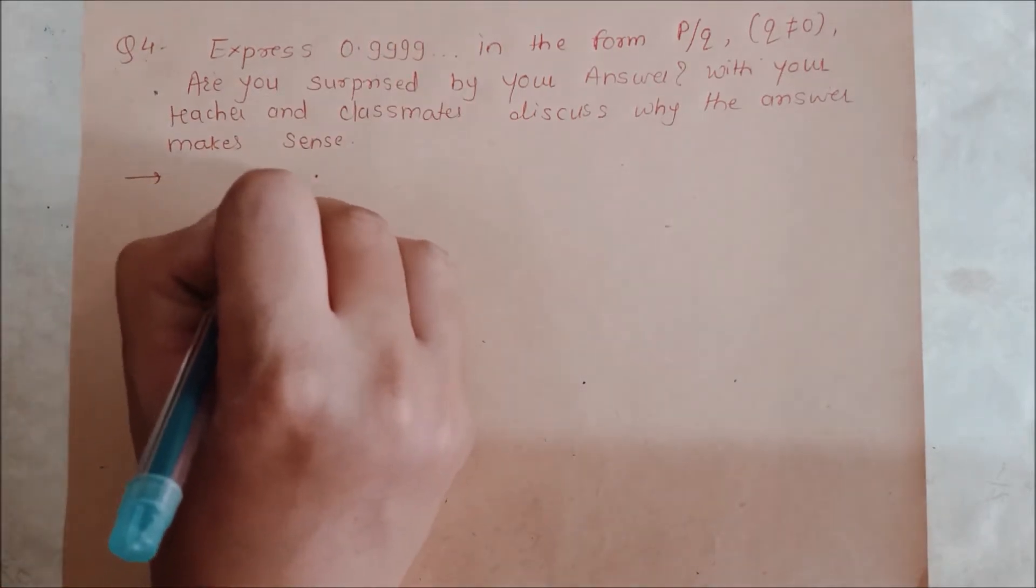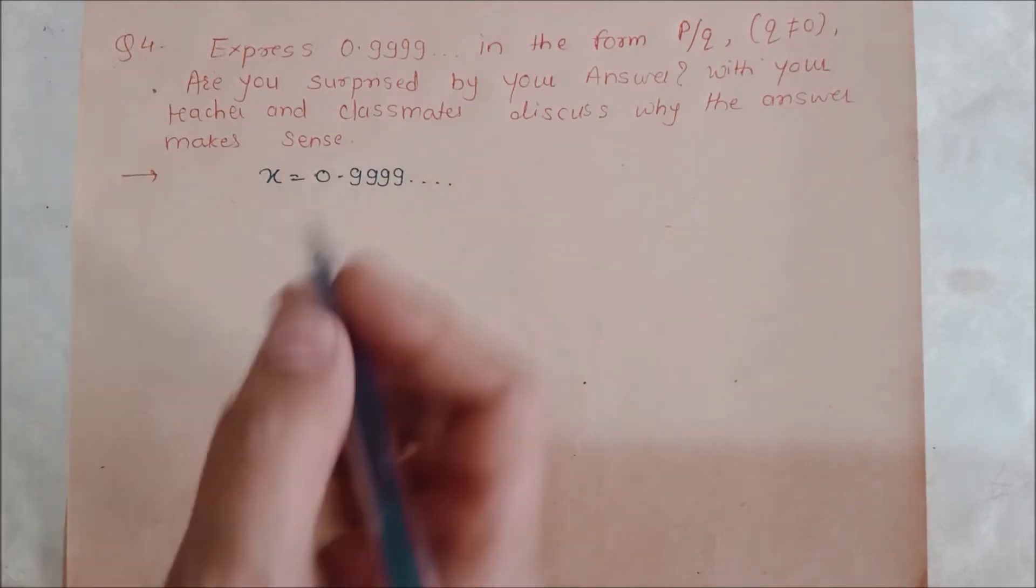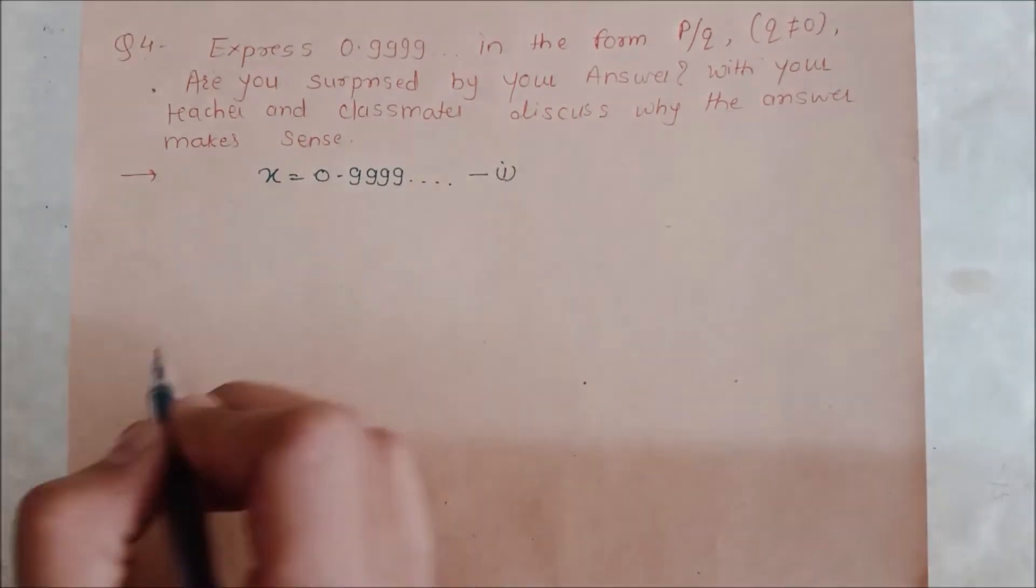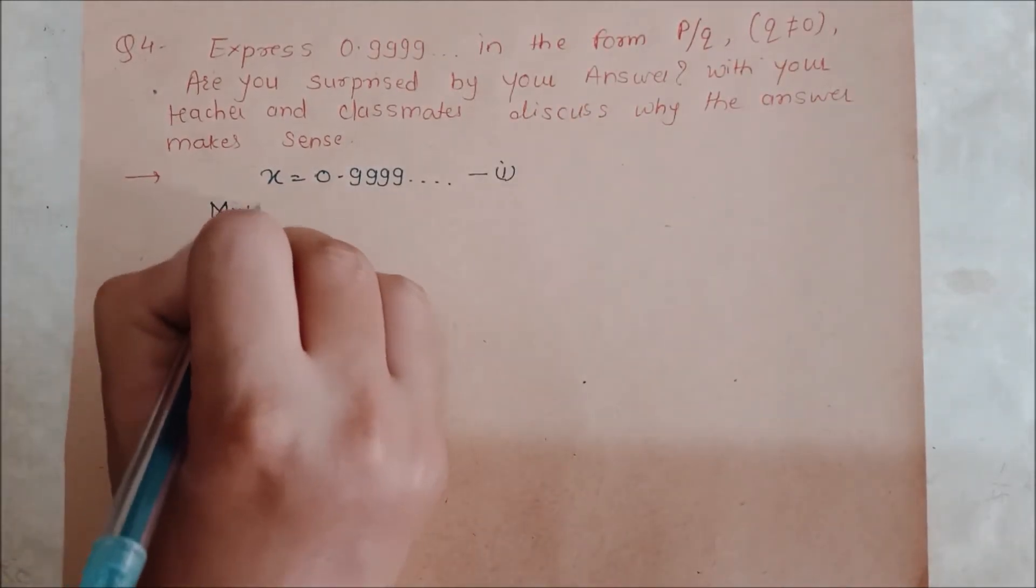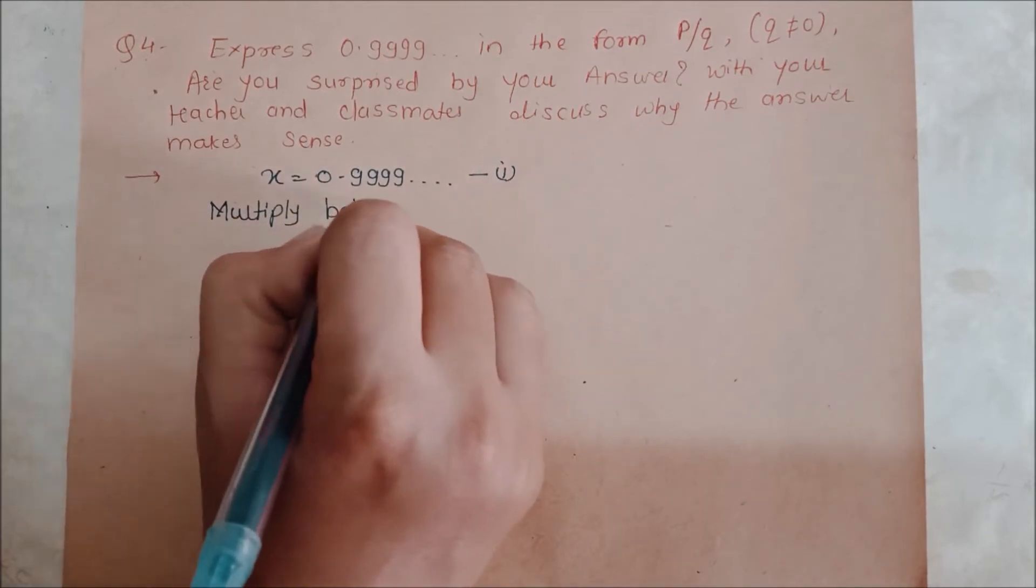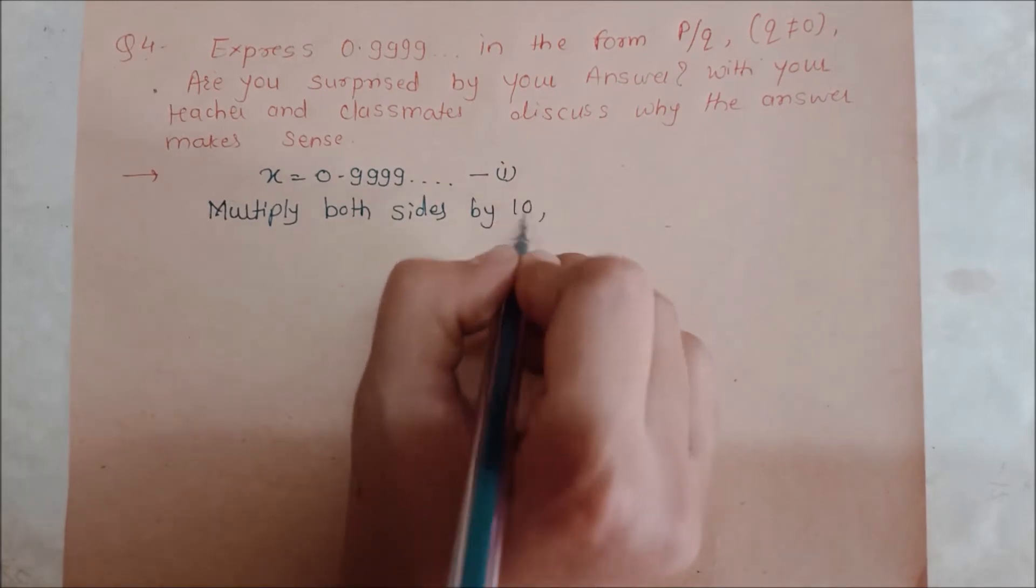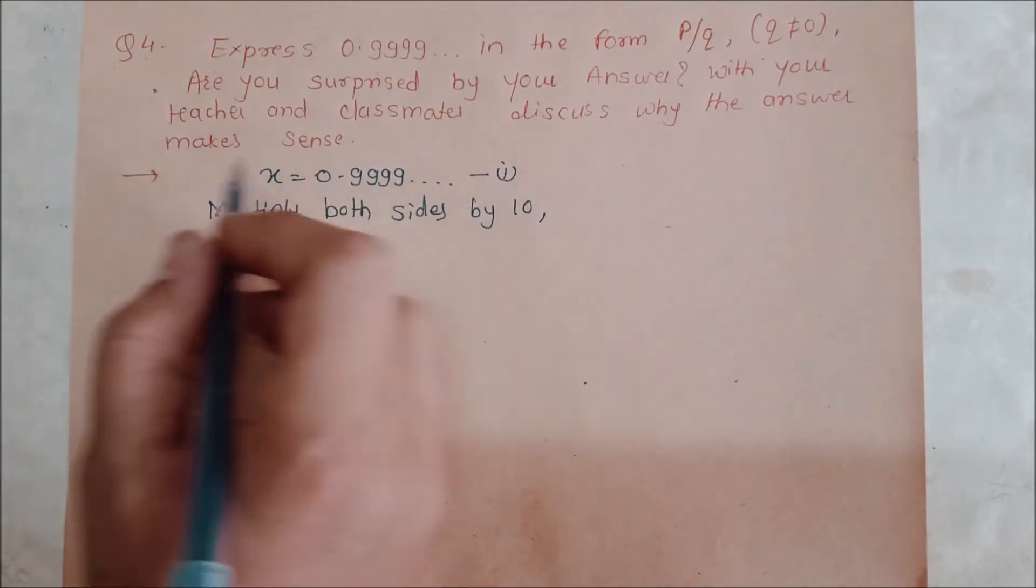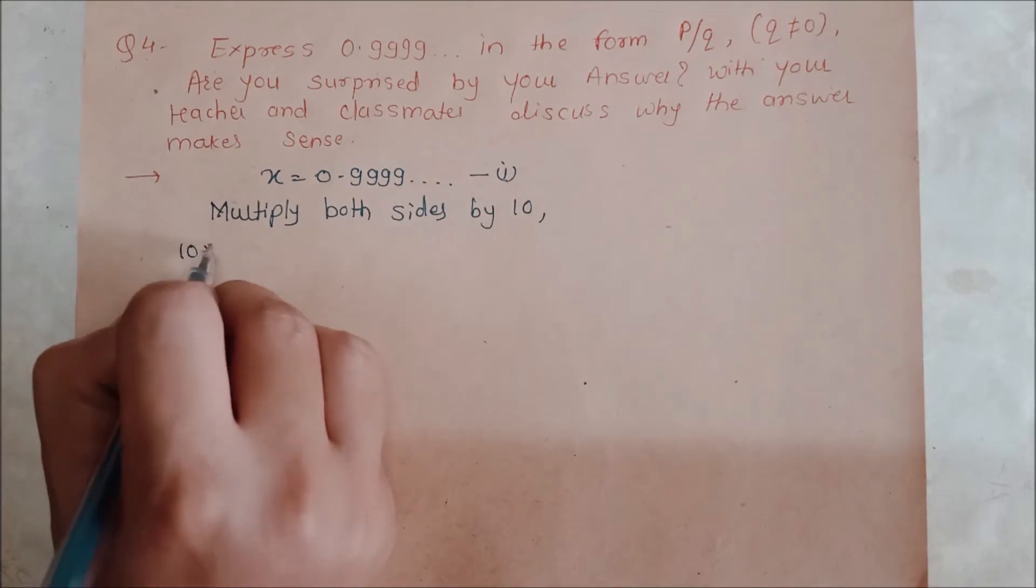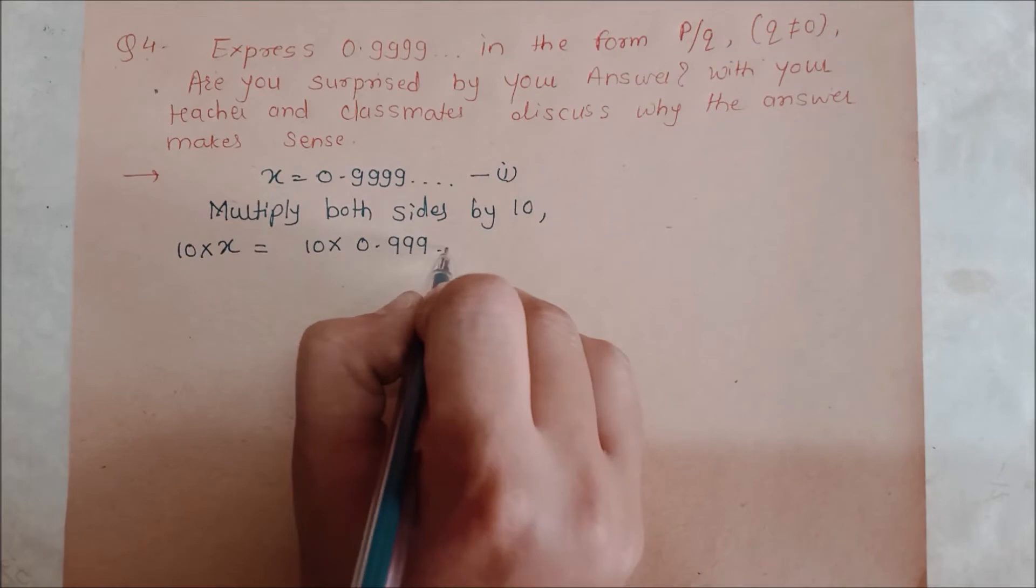First of all, the value we will call x. That is 0.9999... That means 9 repeats. That means 10x is equal to 10 times 0.9999...